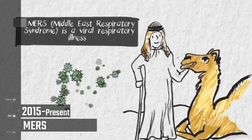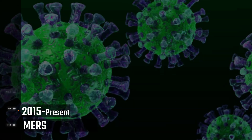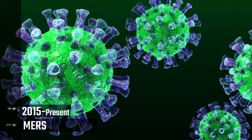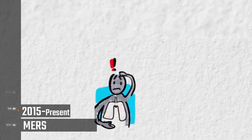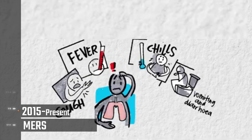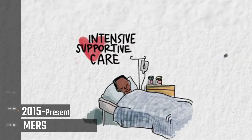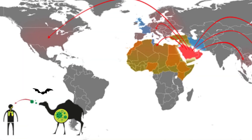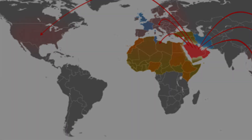MERS, 2015 to present. Middle East Respiratory Syndrome (MERS) is an illness caused by a coronavirus called Middle East Respiratory Syndrome Coronavirus (MERS-CoV). Most MERS patients develop severe respiratory illness with symptoms of fever, cough, and shortness of breath. About three or four out of every ten patients reported with MERS have died. The virus can be transmitted to people from bats and camels, and the death toll so far is 858.